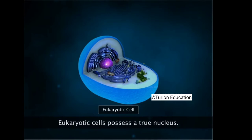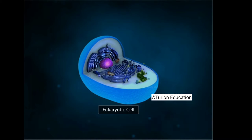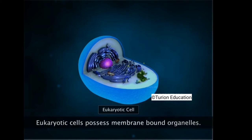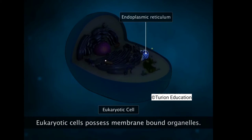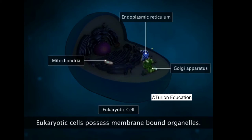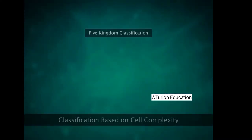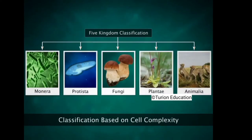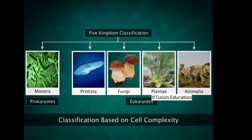Eukaryotes are cells that have a true nucleus. They possess membrane-bound organelles such as the endoplasmic reticulum, mitochondria, and Golgi apparatus that carry out specialized functions in the cell. In the five-kingdom classification, R.H. Whittaker placed all prokaryotes in Kingdom Monera, and all organisms in Kingdoms Protista, Fungi, Plantae, and Animalia are eukaryotes.